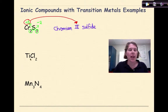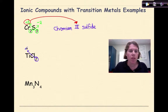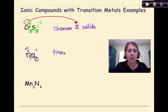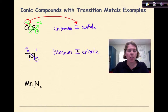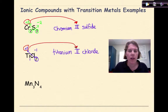For TiCl2 — titanium and chlorine — if I uncrisscross the subscripts, the 2 gives titanium a charge of plus 2, and there's an assumed subscript of 1 on chlorine, so chlorine is minus 1. The name is titanium(II) chloride. That plus 2 is represented by Roman numeral II.